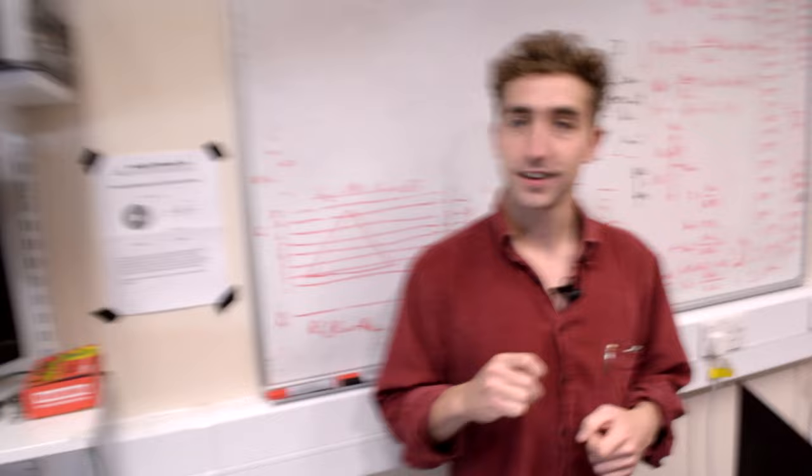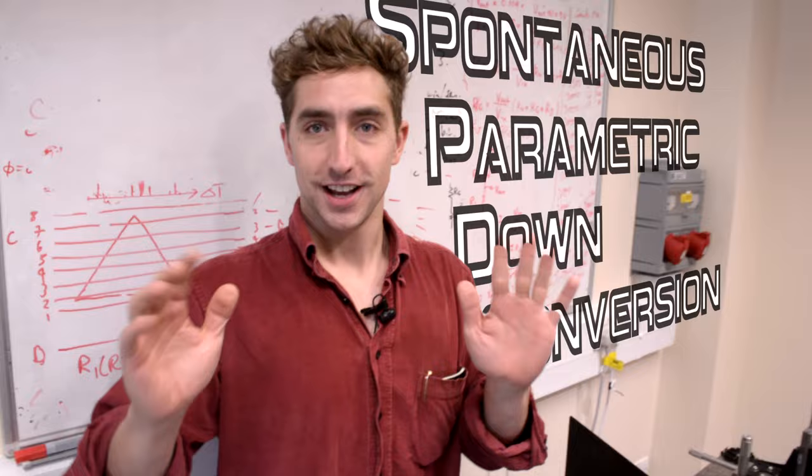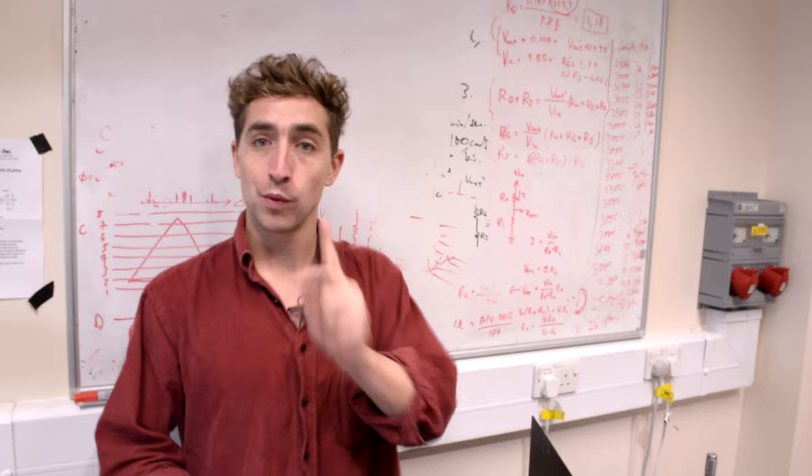So Jack, tell me a little bit about how you build your entangled photons. So we want to get entangled photons, right? And the way we do that is by a process called spontaneous parametric down conversion. Okay, that sounds loads more complicated than it actually is. It's really simple. It is the process whereby one photon splits into two. So I can show you how we do that over here.